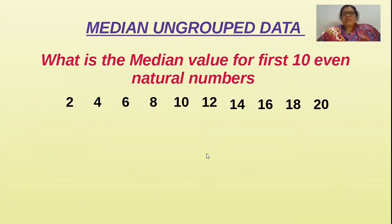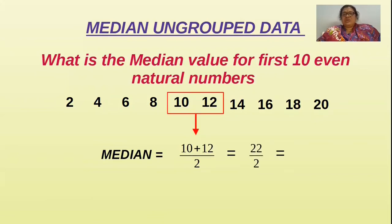So what will be the median for these numbers? There are 10 in number. The median value will be the numbers at the center. There are two numbers at the center that is 10 and 12. For finding out the median we have to take an average that is 10 plus 12 by 2 that is equal to 11.